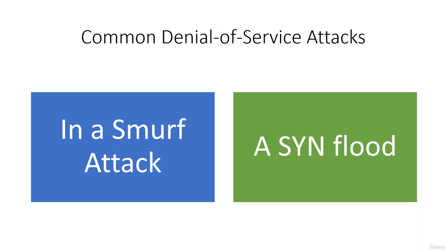Individual networks may be affected by DoS attacks without being directly targeted. If a network service provider (ISP) or cloud service provider has been targeted and attacked, the connected network will also experience a loss of service.